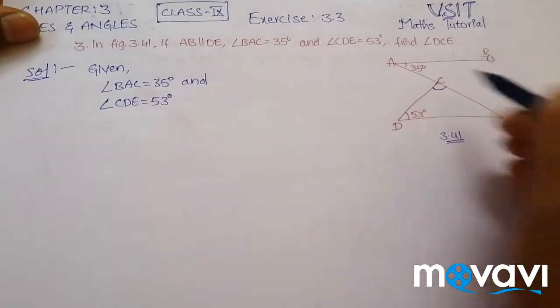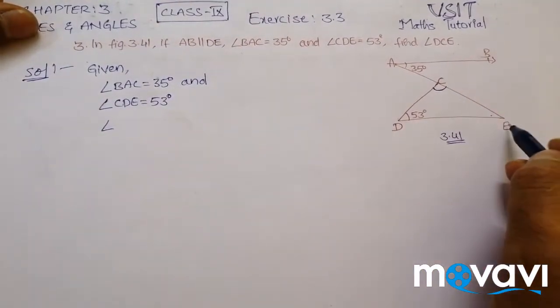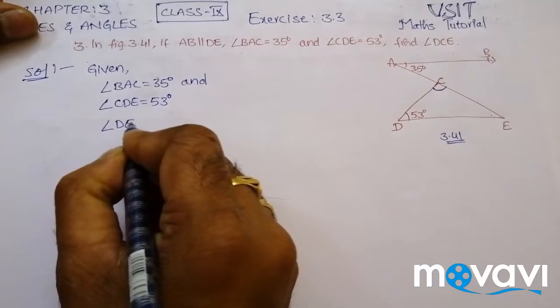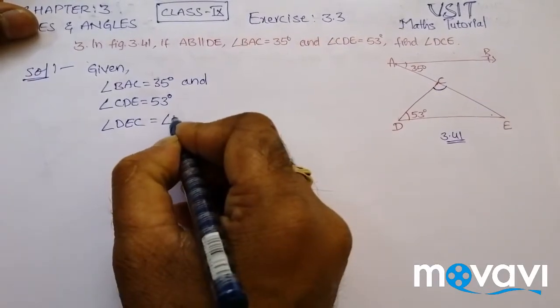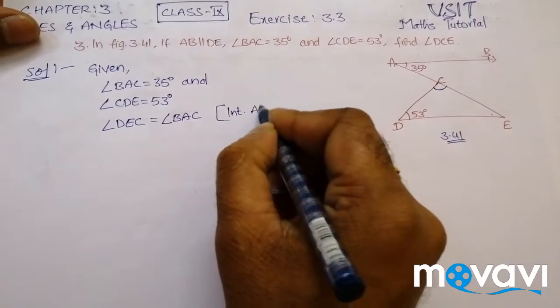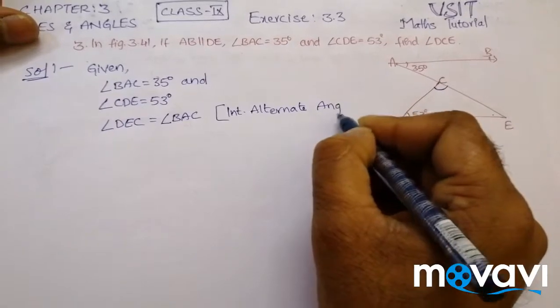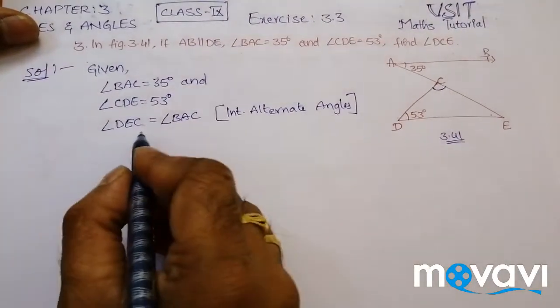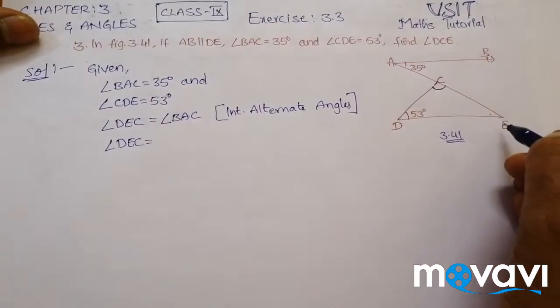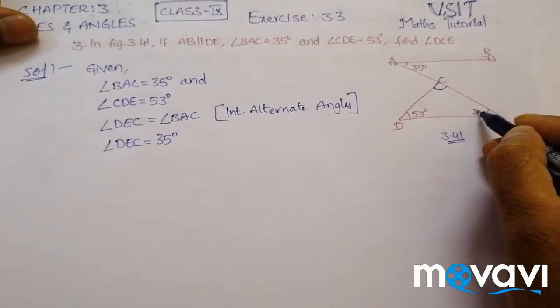Angle BAE is equal to angle DEC. Why? Because interior alternate angles, so they are equal. So angle DEC will be equal to angle BAC. Angle BAE is 35 degrees, so this will be 35 degrees.